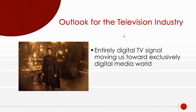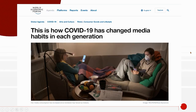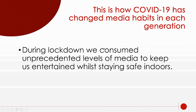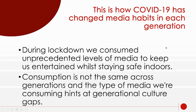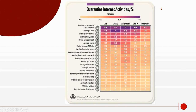The TV signal is now completely digital, moving toward exclusively digital delivery. Online viewing and streaming is obviously changing everything. COVID-19 has really changed media habits for young and older people. During lockdown, we consumed unprecedented levels of media because everybody was indoors. Consumption was not the same across different generations — the types of media consumed hint at generational culture gaps. Internet time spent went up for everyone during quarantine, with millennials, Generation X, Generation Z, and boomers all behaving differently online.